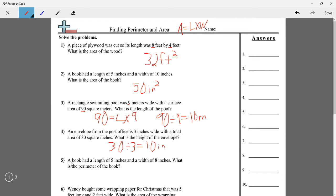Now for number 5, a book had a length of 5 inches and a width of 8 inches. What is the perimeter of the book? They're switching it up, going to perimeter now. Remember, perimeter is just adding up all of the sides. I can draw the rectangle and put all of the sides and then add them up. So 8 plus 8 is 16, 5 plus 5 is 10. So 10 plus 16 equals 26 inches.